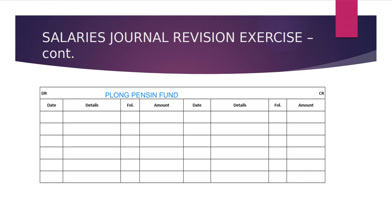We're just showing that we must take the money — liability. So EMP is a liability. Creditors for salaries is a liability. When it comes to pension, as long as you see the name of the pension provider or fund, just know that it's a liability because we owe them. So just know that it's a liability and the same rules will apply.